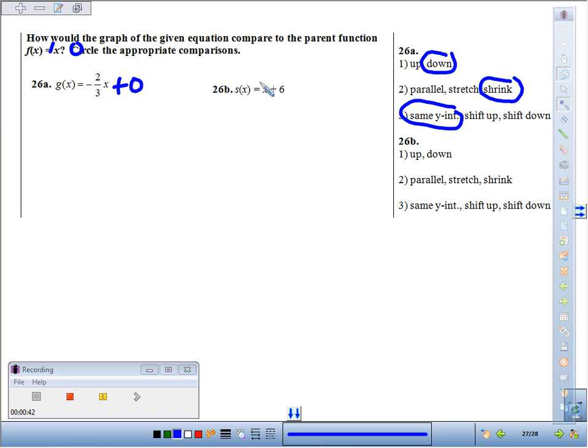For 26b, we have a slope of positive one. Since it's positive, this graph is going to go up. It has a slope of one, just like the parent function has a slope of one, so they're going to be parallel.